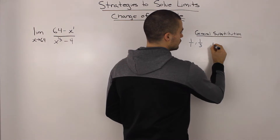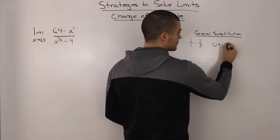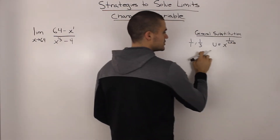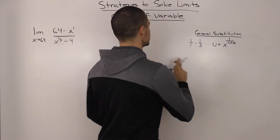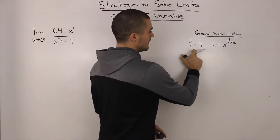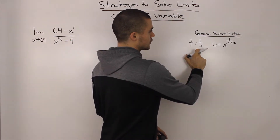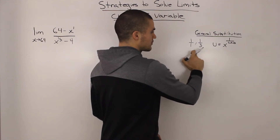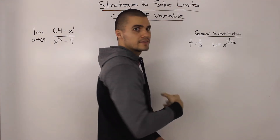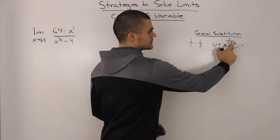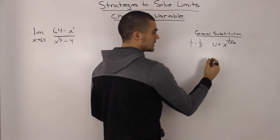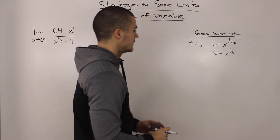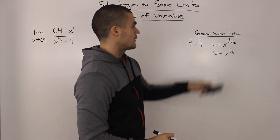The general substitution is: the new variable u equals x to the power of 1 over the lowest common denominator between the exponents. Note that some teachers say to use the lowest exponent — that's not always correct, though it works here since the LCD between 1 and 1/3 is 3. So the general substitution is u equals x to the power of 1/3.